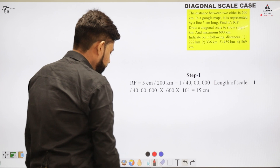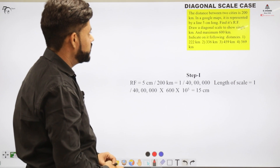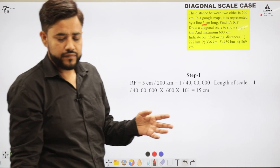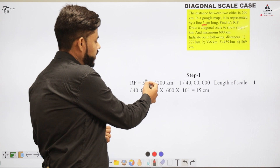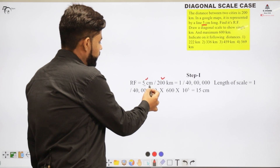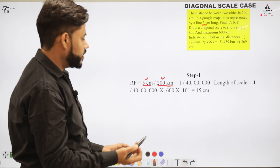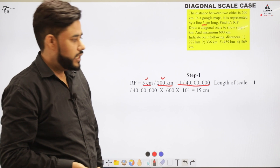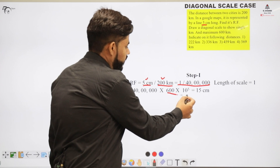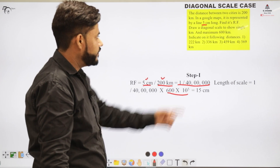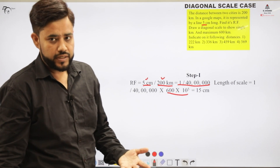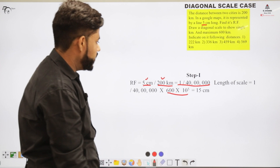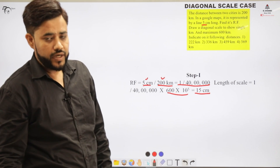The distance between the two cities is 200 kilometers, and the line on Google Maps is 5 centimeters. RF has the formula: distance on the drawing divided by the actual distance. So RF = 5 cm / 200 km. Converting to similar units gives RF = 1/4,000,000. Then the length of the scale is RF multiplied by the maximum distance: (1/4,000,000) × 600 km, converting to centimeters gives 600 × 10⁵ cm, resulting in a length of 15 centimeters.